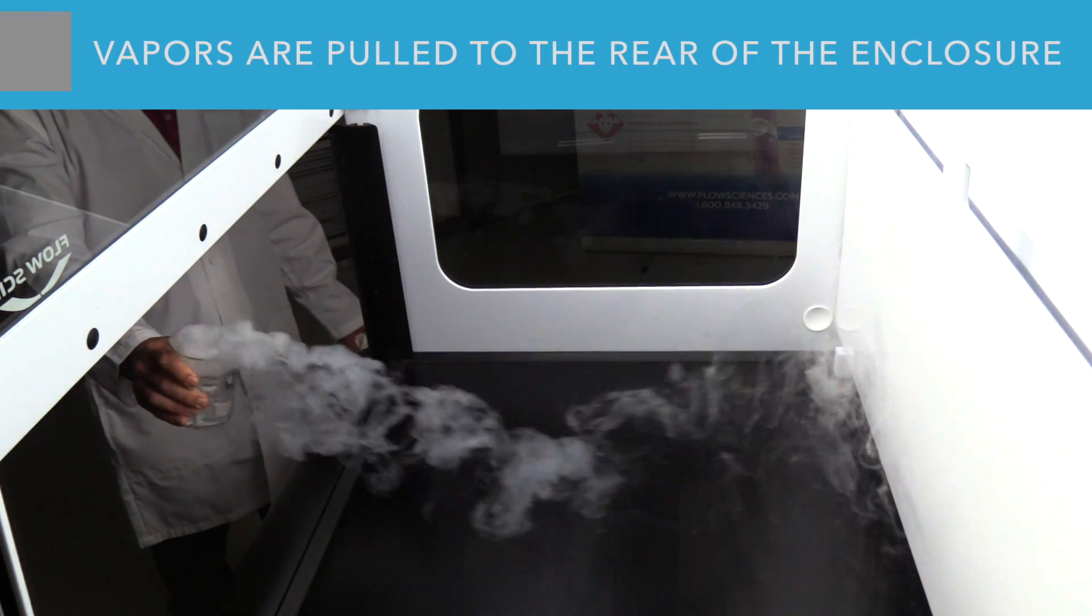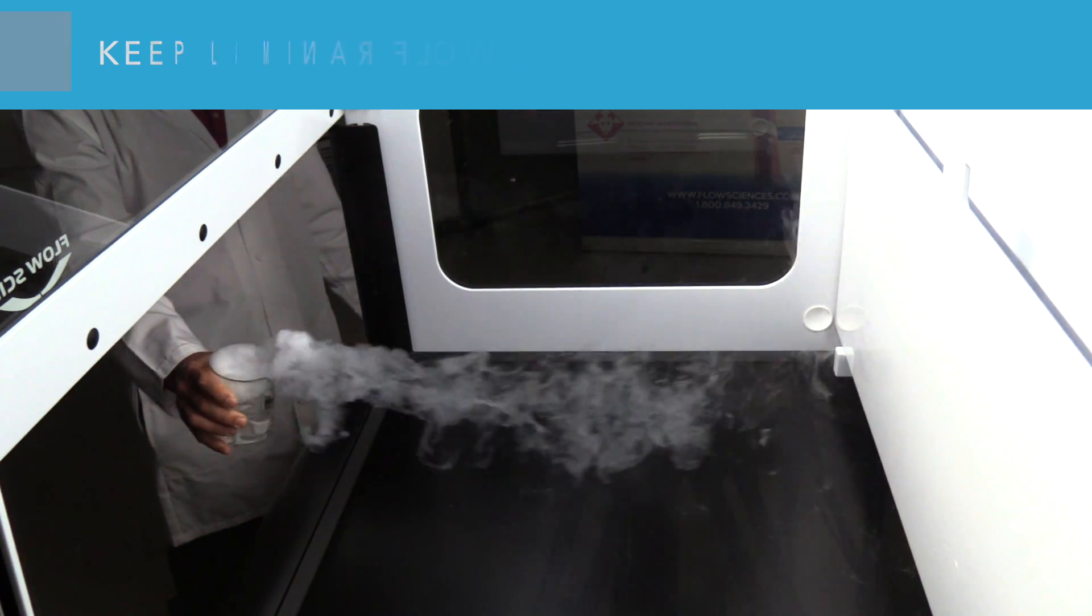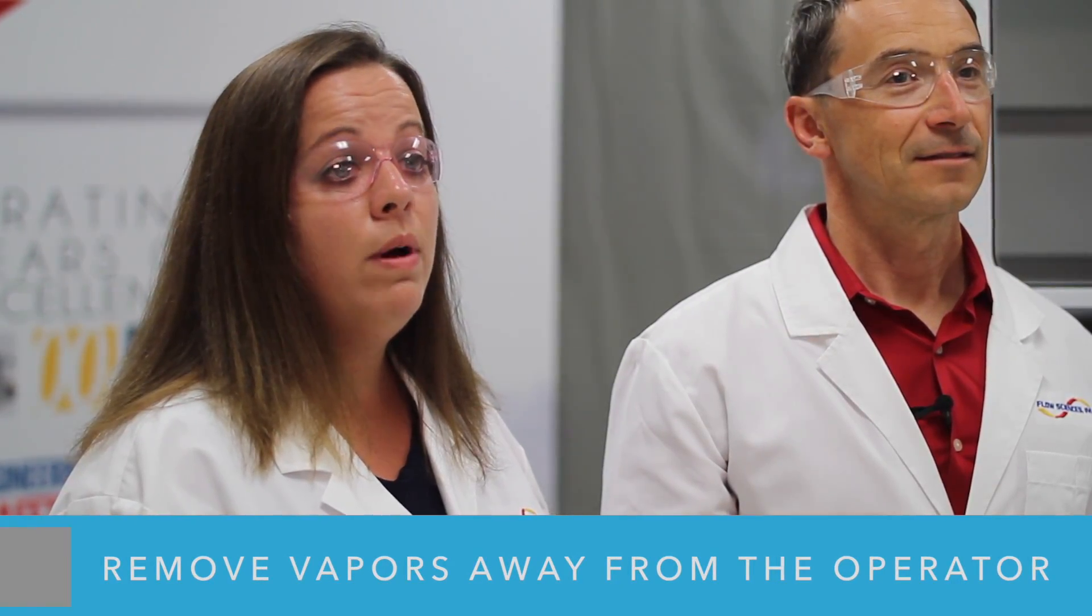Vapors are pulled to the rear of the enclosure, then up through the plenum to keep laminar flow across the work surface and remove vapors away from the operator.